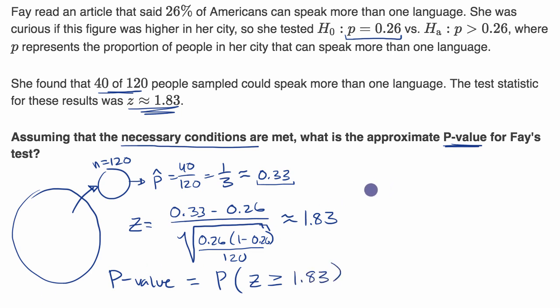So to help us visualize this, imagine, let's visualize what the sampling distribution would look like. We're assuming it is roughly normal. The mean of the sampling distribution right over here would be the assumed population proportion. So that would be p₀ when we put that little zero there. That means the assumed population proportion from the null hypothesis. And that's 0.26.